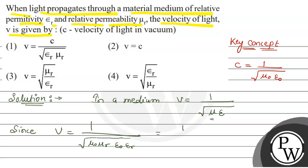So that's why we will adjust these terms and write 1 upon mu_0 epsilon_0 divided by mu_r epsilon_r.